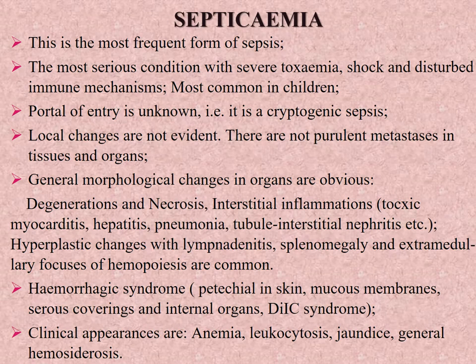Septicemia is the most frequent form of sepsis, characterized by the following peculiarities: the most serious condition with severe toxemia, shock, and disturbed immune mechanisms; most common in children; portal of entry is unknown (cryptogenic sepsis); local changes are not evident; no permanent metastases in tissues and organs. General morphological changes in organs are obvious: degeneration and necrosis, interstitial inflammation, toxic myocarditis, hepatitis, pneumonia, tubulointerstital nephritis, etc. Hyperplastic changes with lymphadenitis, splenomegaly, and extramedullary foci of hemopoiesis are common.